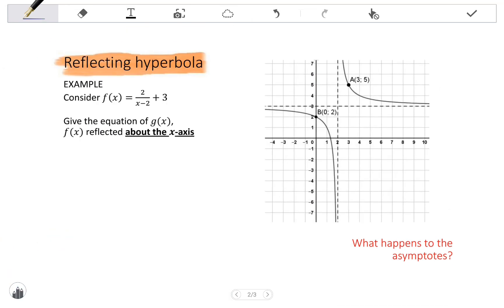Reflecting about the x-axis. So, here we have the same graph, but now we are going to reflect it about the x-axis. Remember, in this reflection, only the y-coordinates change sign, but the x-coordinates remain the same.